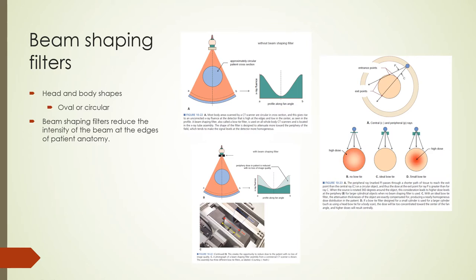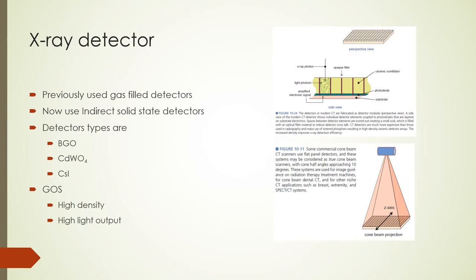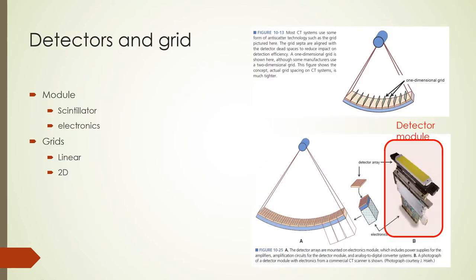In older generation CT scanners, gas-filled detectors were used. Now CT detectors use scintillation crystals for converting X-rays to visible light — made of bismuth germanate, cadmium tungstate, cesium iodide, or gadolinium oxysulfide, which has high density and high light output. Each scintillation detector module has associated electronics with gain channels and an analog-to-digital converter. There is an anti-scatter grid between each module, which can be linear or 2D.